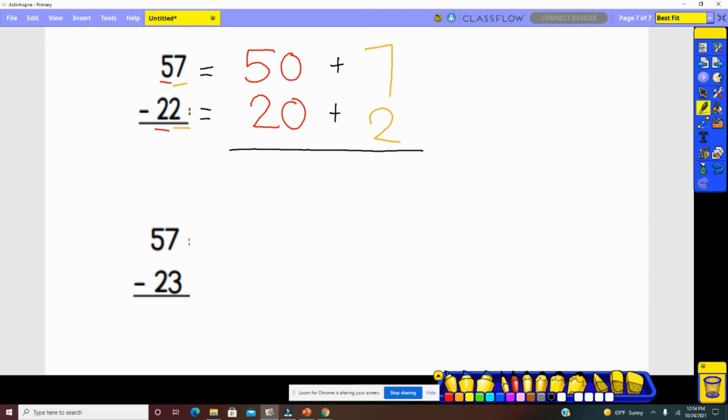Now we have our expanded form, but instead of adding these numbers, we have to be sure that we are attending to that this is a subtraction problem. So, 7 take away, or minus 2 gives us 5. 50 minus 20 would give us 30, plus 5 will be the difference for this problem. So, 57 minus 22 equals 35.